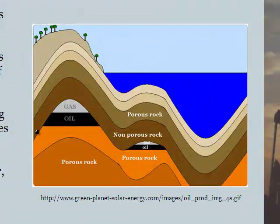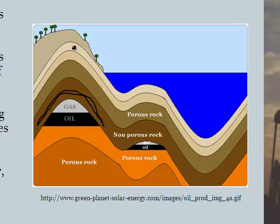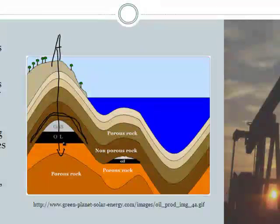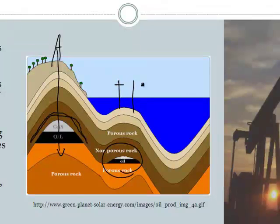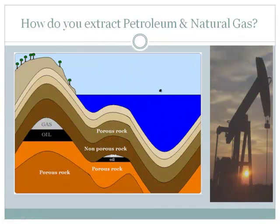The oil seeps upward until it hits a non-porous layer, and there it collects. Exploration geologists who are looking for oil and natural gas are basically looking for this structure, which is called an anticline. When they find this anticline, they can put a drilling rig at the top and drill down to find the oil and natural gas. Over the ocean, they have to build an offshore drilling rig - basically the same concept, just positioned over the water.